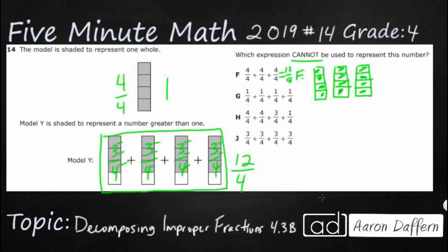4 fourths plus 4 fourths plus 4 fourths does equal 12 fourths, which means this is really three wholes. Because as you can see, I've got three wholes bubbled in. So F is incorrect because we're looking for one that cannot be used.